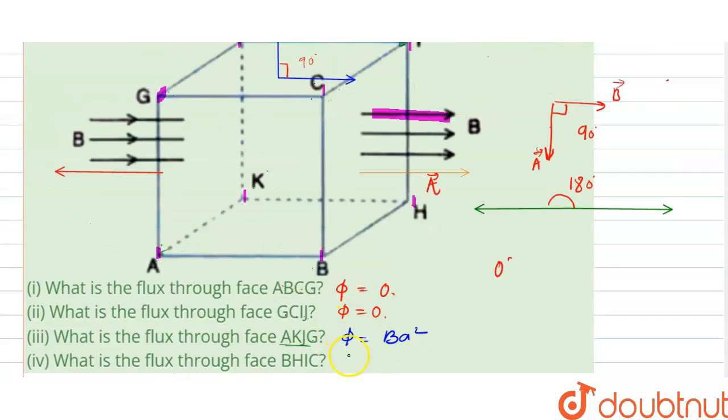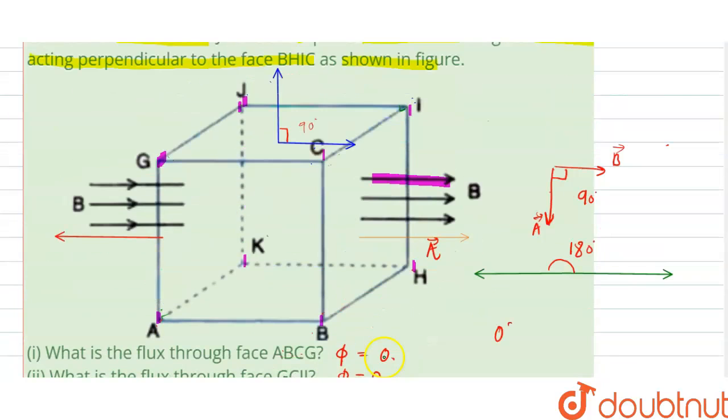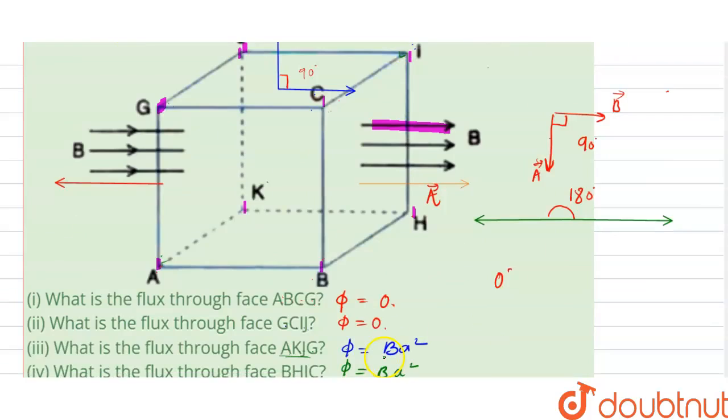So here if you consider only the magnitude, we are getting that this phi equals similar to AKJG and its magnitude is B into a square. We have found all of these things, which faces have flux and how much.